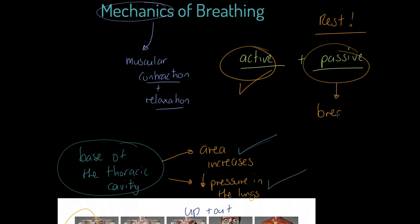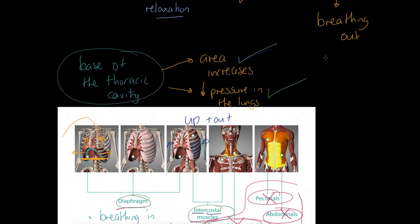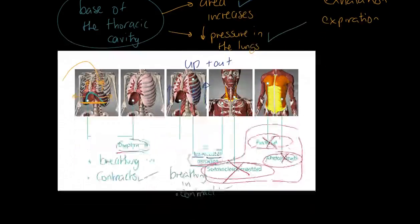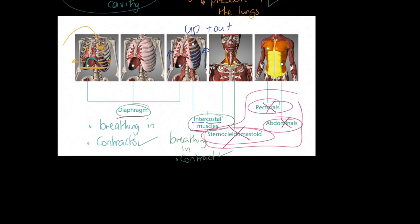The passive part is all about breathing out - exhalation or expiration. What's going to happen now is the diaphragm is going to relax and return to its dome shape. The intercostal muscles are going to relax and allow the ribs to fall back downwards.